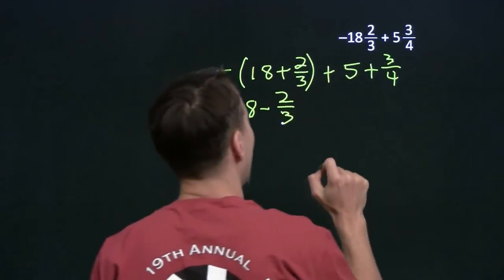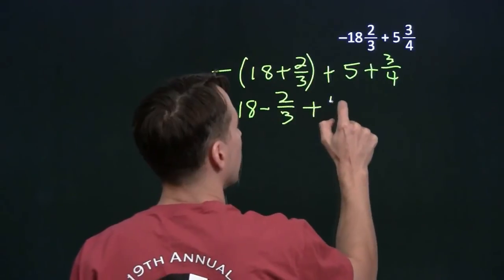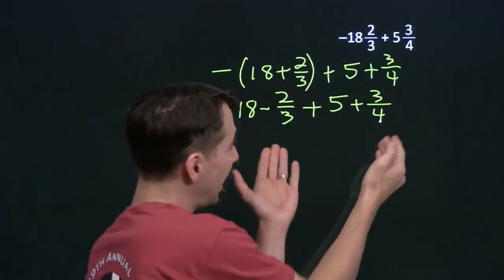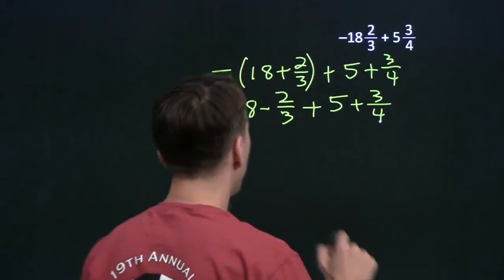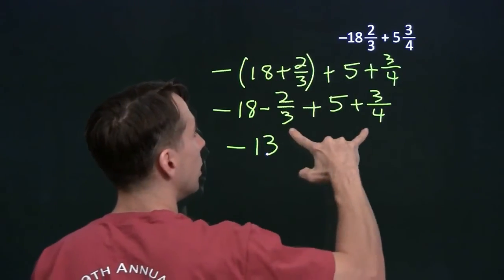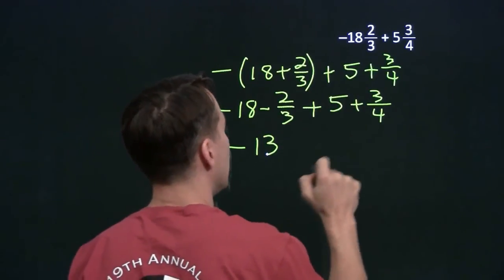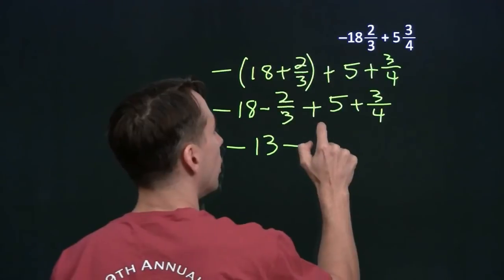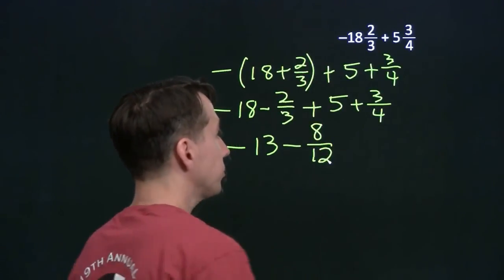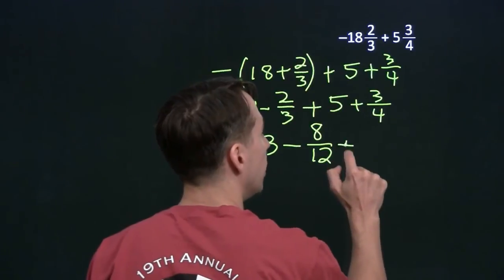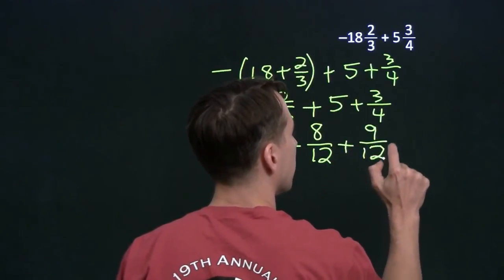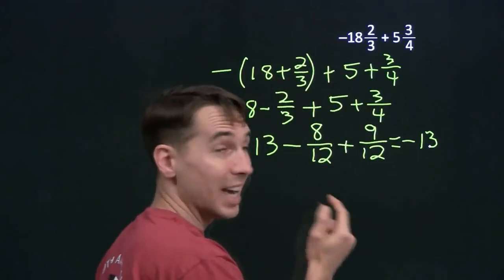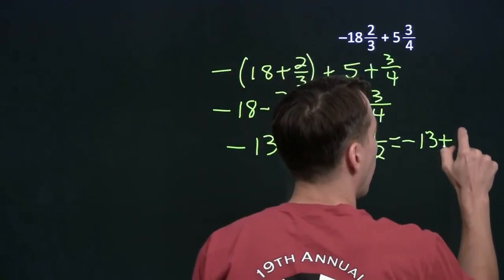That negative out there applies to the 18 and to the 2 thirds, giving us plus 5 plus 3 quarters. We'll handle the integer parts and fractional parts separately. Minus 18 plus 5 is minus 13. To take care of our fractions, we get a common denominator. We have 3 and 4, so we'll use 12. Multiplying the top and bottom of 2 thirds by 4 gives us 8 twelfths. Multiplying the top and bottom of 3 quarters by 3 gives us 9 twelfths. So we have negative 13 minus 8 twelfths plus 9 twelfths, which leaves us 1 twelfth.